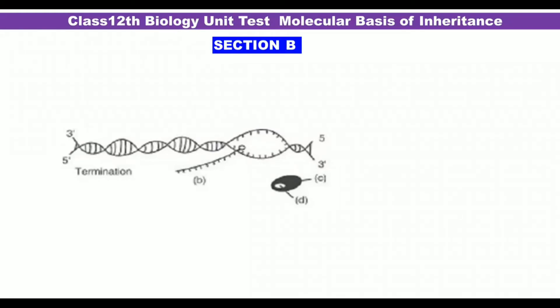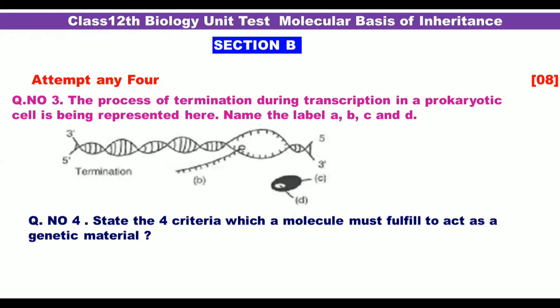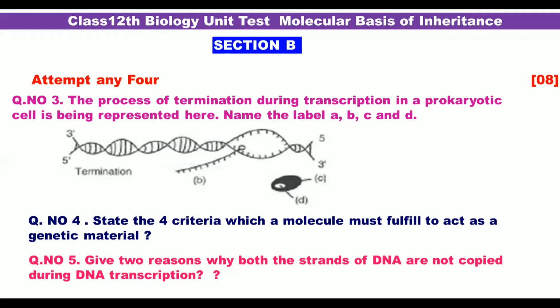Section B — attempt any 4. Question 3: The process of termination during transcription in a prokaryotic cell is represented — label parts A, B, C, and D. Question 4: State the four criteria which a molecule must fulfill to act as genetic material. Question 5: Give two reasons why both strands of DNA are not copied during transcription.